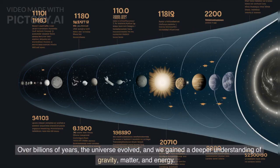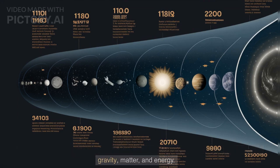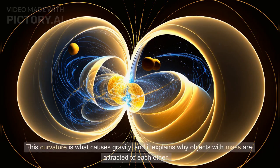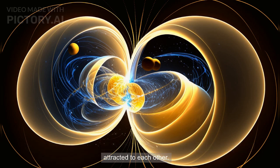Over billions of years, the universe evolved, and we gained a deeper understanding of gravity, matter, and energy. We learned that they curve the fabric of space and time surrounding them. This curvature is what causes gravity, and it explains why objects with mass are attracted to each other.